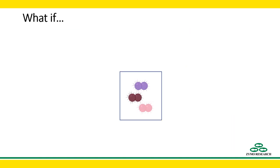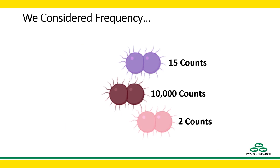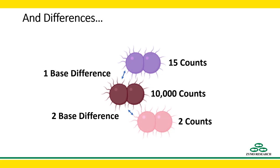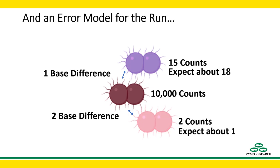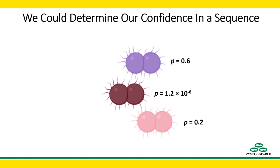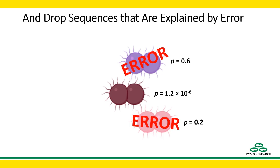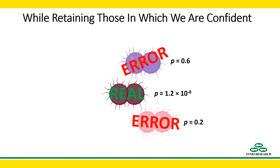But what if we considered the frequency with which we observe each exact sequence, and the differences between exact sequences, and with some computational effort built an error model for our sequencing run — so we might know which sequences can be expected due to errors and at about what frequencies? We could determine our confidence in a sequence not being artifact, and drop sequences likely to be from error or otherwise artifact, while retaining sequences where we can be highly confident they did not arise from sequencing error or other artifact.